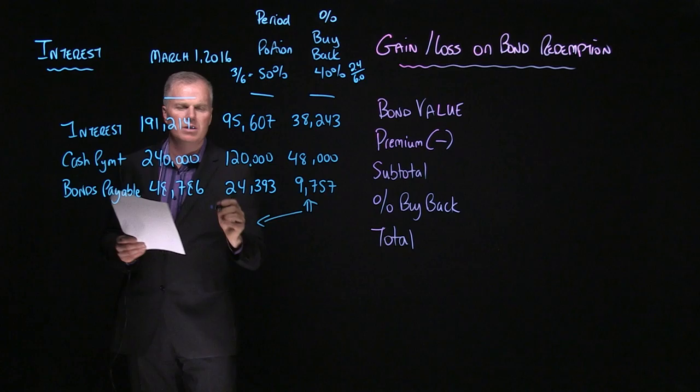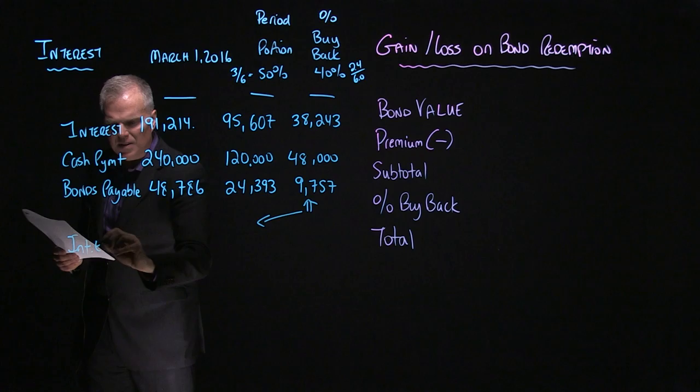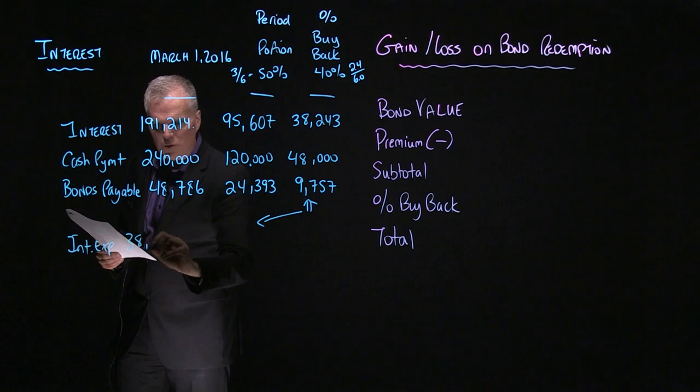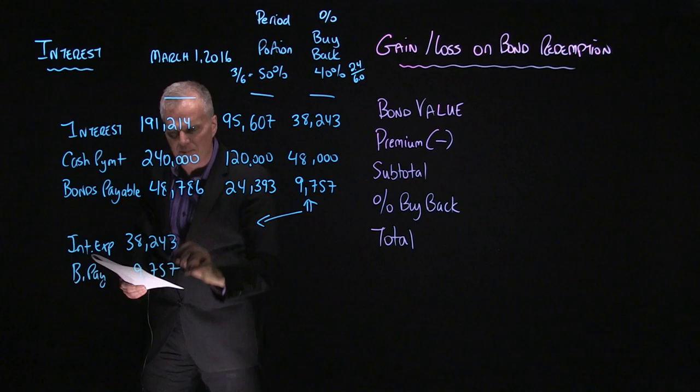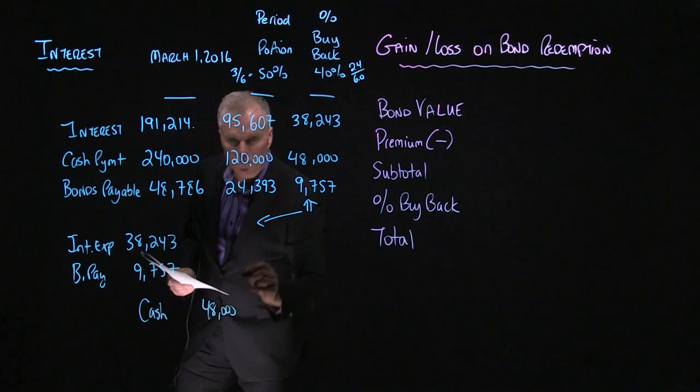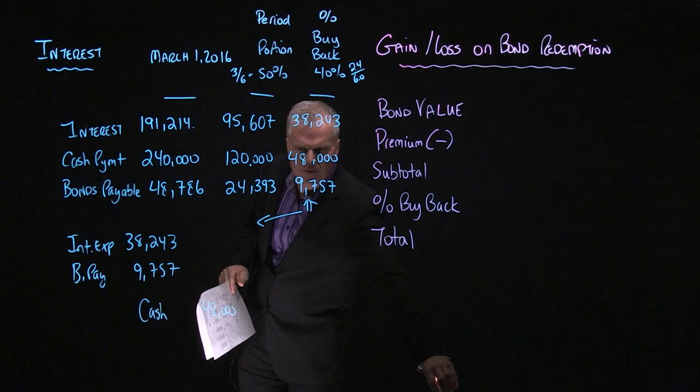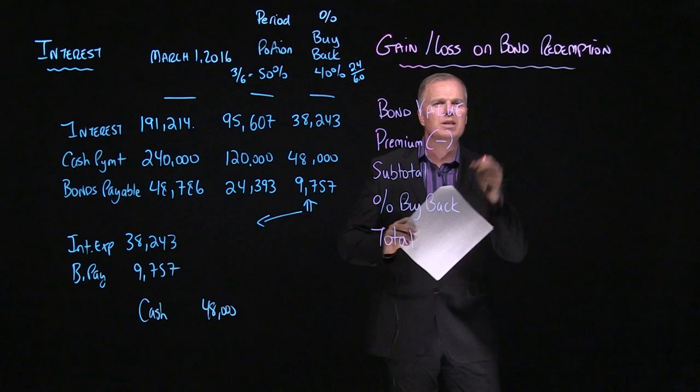Now that I have these final numbers, I can use them to complete my first journal entry. So I'm going to have interest expense, $38,243. I'm going to have bonds payable of $9,757. And the final number will be cash, $48,000. So great. We now have the first journal entry done. And we use this template to help create and generate those numbers.